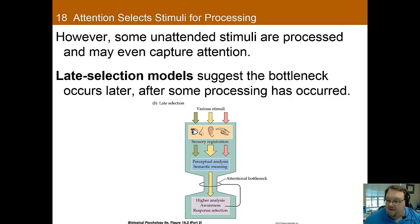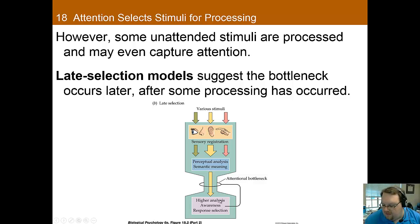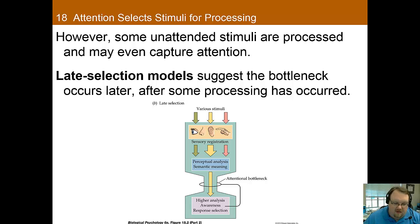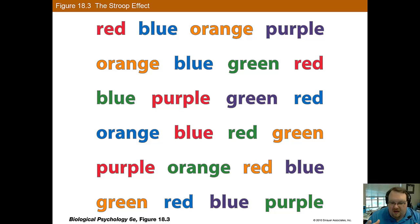What could explain that is a later selection model. Here, all the sensory information received gets processed for semantic meaning first, and then you have your attentional bottleneck — it filters out anything that's not important, and only the things you are paying attention to, the things that are important, get filtered through to higher analysis. This explains how some information is processed but doesn't seem to make it into awareness. The Stroop test also provides evidence for a later attentional bottleneck — in the Stroop test, irrelevant information interferes with target stimuli at a semantic level, suggesting that this information must also be being processed. Thus, accurate attention in this task must involve late attentional selection.